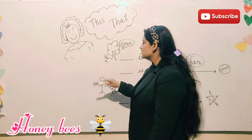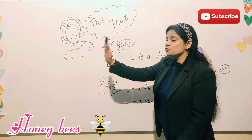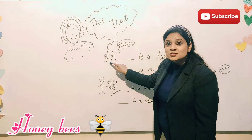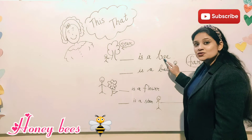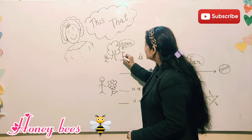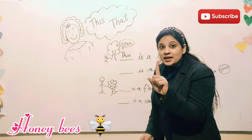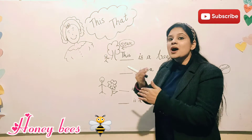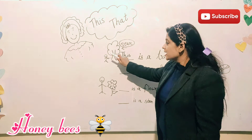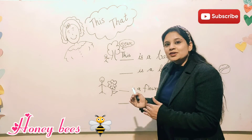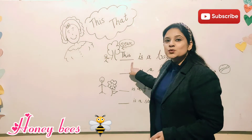Let's see here — this boy is standing near the tree, and this boy can easily touch the tree because he is standing very near to it. So what will the boy say for the tree? 'This is a tree.' Because there is only one tree which is near to the boy. So whatever the thing — only one thing which is near to us — for that we use 'this'.